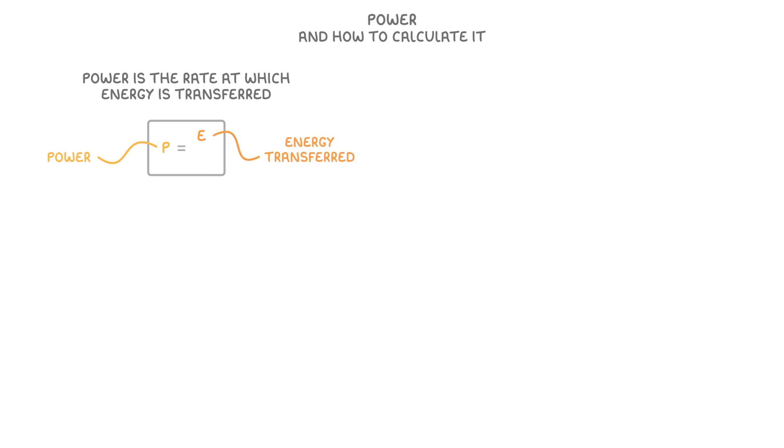Now although they both mean pretty much the same thing, it's important to know that there are actually two different definitions for power, each with their own equation. One is that power is the rate at which energy is transferred, which can be shown by the equation power equals energy transferred divided by the time it took to transfer that energy.